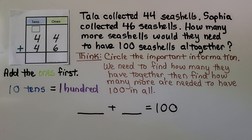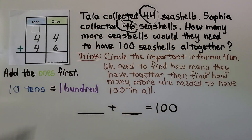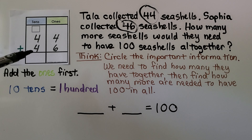Here we have a word problem. Tala collected 44 seashells and Sophia collected 46 seashells. How many more seashells would they need to have 100 seashells altogether? We circle the important information: 44 and 46. We need to find how many they have together, then find how many more are needed to have 100 in all. So we add 44 plus 46.